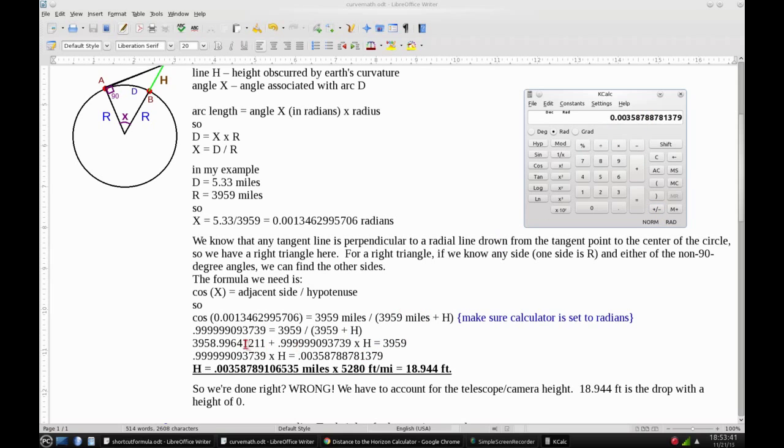And if I divide that by the 0.9999993739, I get this number. And that's H in miles. I'm going to convert that to feet by multiplying by 5,280 feet per mile, and I get 18.944 feet.